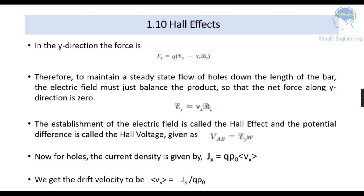And the establishment of this electric field is called Hall effect and there is a potential difference that is called the Hall voltage. So Hall voltage will be produced between the two contacts A and B. So Vab that is the Hall voltage which is denoted as εy·w. So now for the holes the current density which is denoted as Jx which will be equal to qp0·vx where vx is our drift velocity that is equal to Jx by qp0.